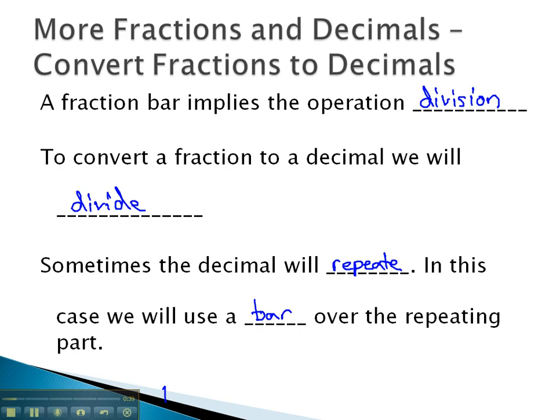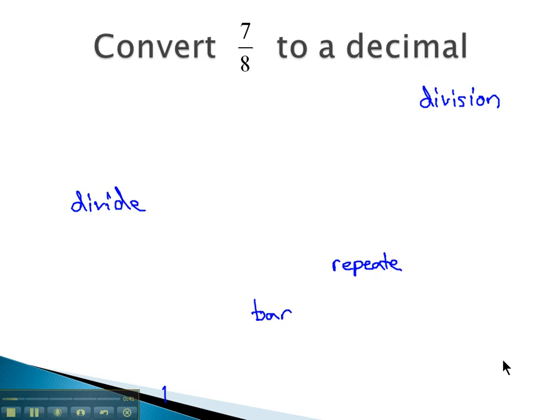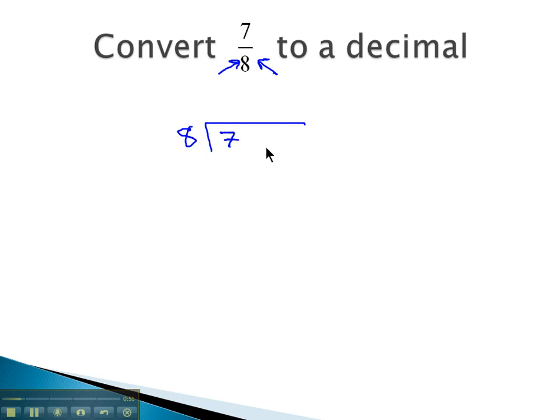So, let's try and change some fractions into decimals, starting with the fraction 7 eighths. As we set up our long division, the bottom number must always go out front the divisor and the 7 goes inside.